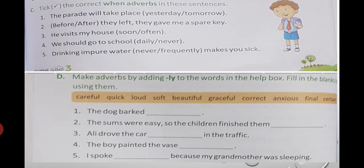Next, your homework. Do part C and D. In part C, tick the correct 'when' adverb in the sentences. For example: 'The prayer will take place yesterday or tomorrow.' Since 'will' refers to the future, yesterday is past, so tick 'tomorrow.'